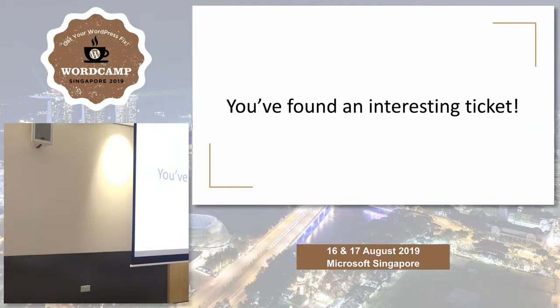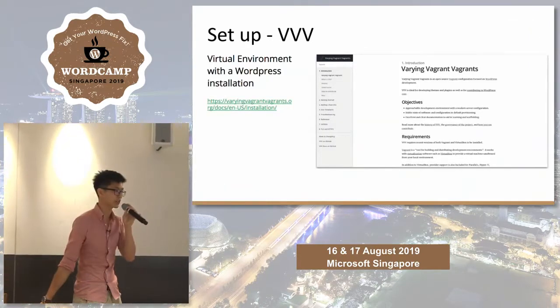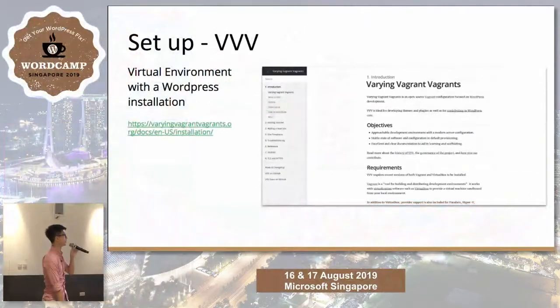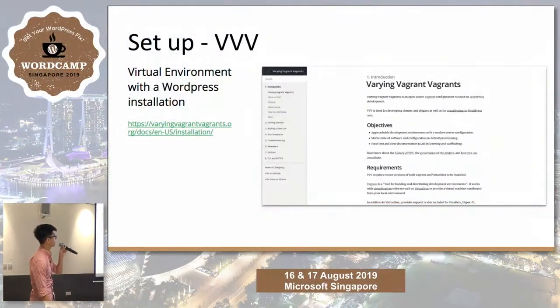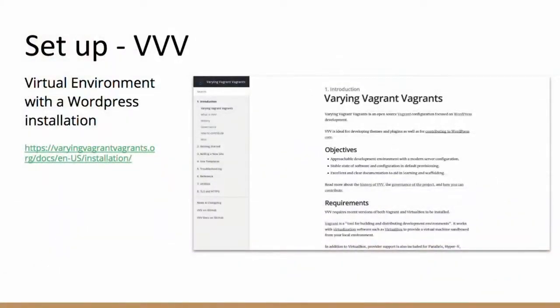Now that you've navigated Track and found an interesting ticket, what do you do? This links to the second phase: setting up the environment. One tool I use is VVV — it's very helpful and allows you to create a virtual environment in WordPress. There's a link to install it, and chapter two gets you installed while chapter six gives you default credentials to log into the database and the WordPress admin console.